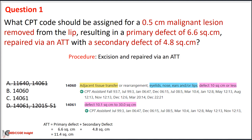After eliminating options A and D, the remaining options represent different defect sizes. Code selection is based on location and flap size, calculated in square centimeters including both the primary and secondary defect. The primary defect is 6.6 square centimeters and the secondary defect is 4.8 square centimeters, totaling 11.4 square centimeters. Based on defect size and location, the correct answer is option C — service code 14061.